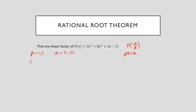All the fractions of the form negative alpha over beta are as follows. With beta = 1: alpha = 1 gives -1/1, alpha = -1 gives 1/1, alpha = 5 gives -5/1, alpha = -5 gives 5/1. Then with beta = 3, we do the same alpha values: giving 1/3, -1/3, 5/3, and -5/3.